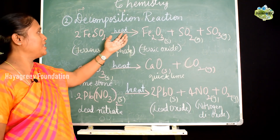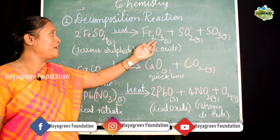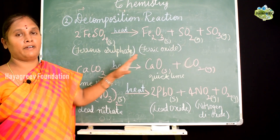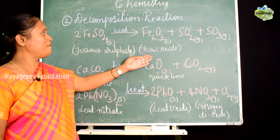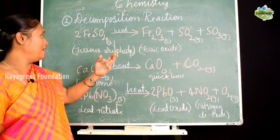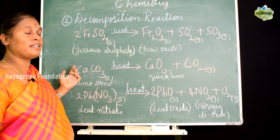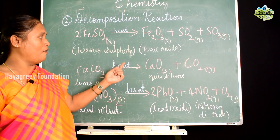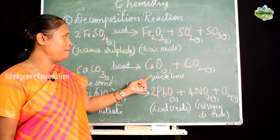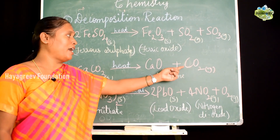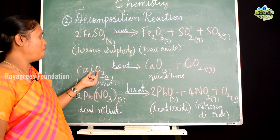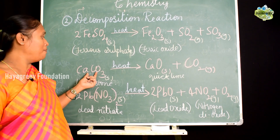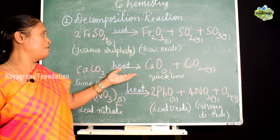First example: when ferrous sulphate is taken in a dry test tube and heated, it undergoes decomposition to form ferric oxide Fe2O3 plus sulfur dioxide and sulfur trioxide — a solid and two types of gases are liberated. Next example: calcium carbonate (limestone) when dry heated forms quick lime CaO and releases carbon dioxide gas. This decomposition of calcium carbonate produces CO2 because of the breakdown of the carbonate part.